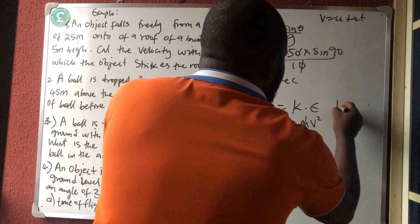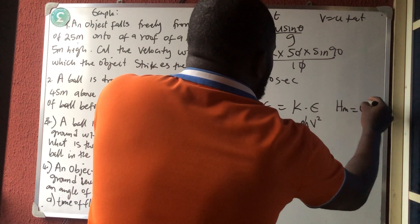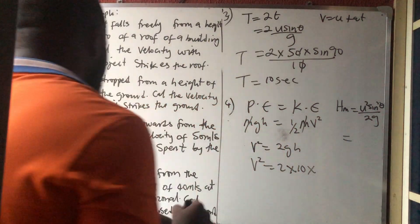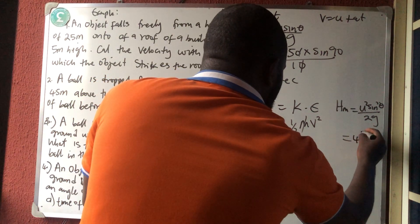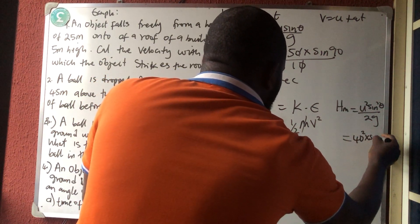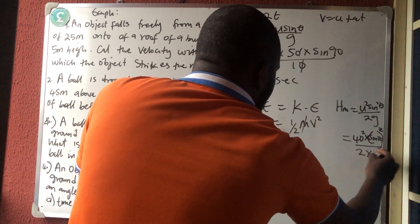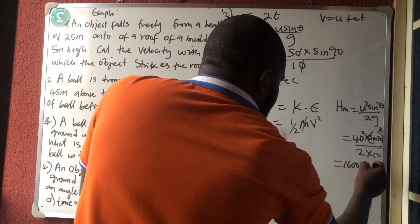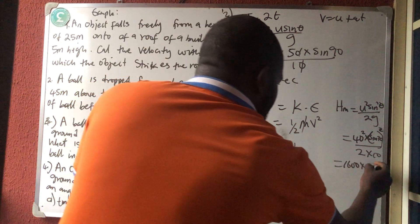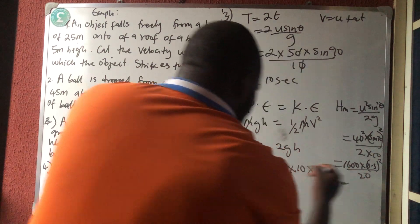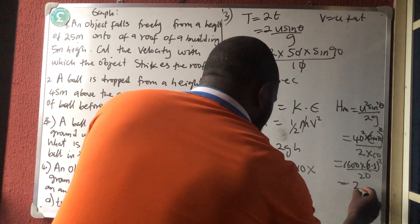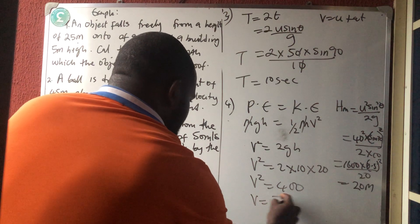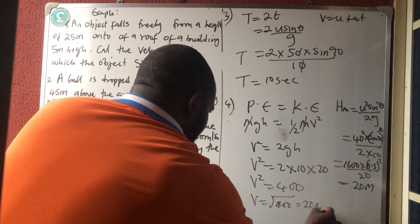The maximum height formula is H equals U squared sine squared theta over 2G. So H equals 40 squared times sine squared 30, divided by 2 times 10. That gives 1600 times 0.5 squared divided by 20, which equals 20 meters. So V squared equals 2 times 10 times 20, giving V equals square root of 400, which is 20 meters per second.